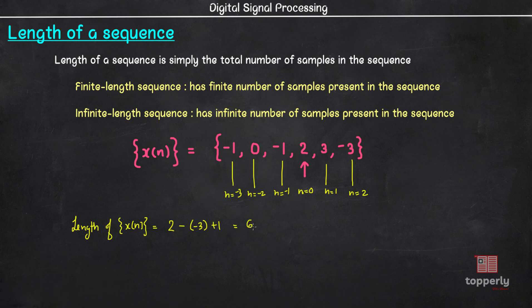If we generalize this concept for any finite length sequence, where n ranges from n1 to n2 and minus infinity less than n1 and n2 less than infinity, then the length of the finite sequence is obtained as n equal to n2 minus n1 plus 1. Now, if n1 tends to minus infinity or n2 tends to plus infinity, then the number of samples in the sequence will be infinite and thus the sequence will become infinite length sequence. So this is the condition for infinite length sequence.